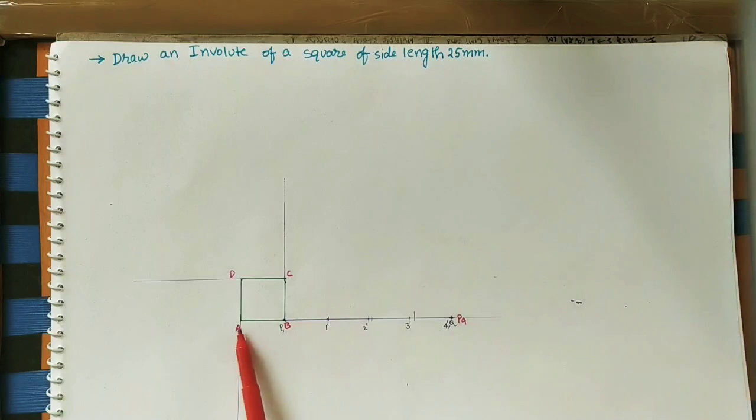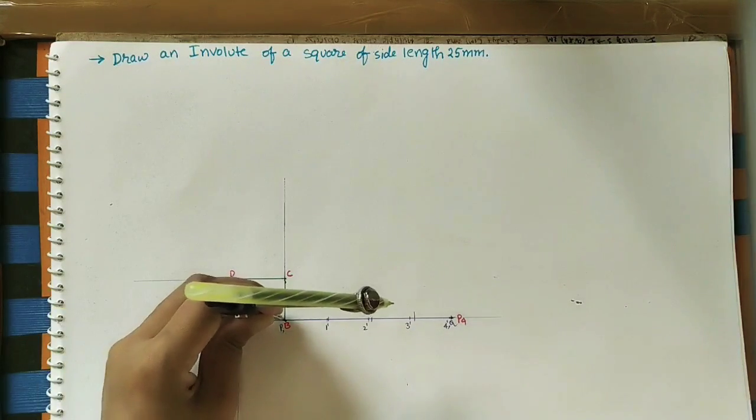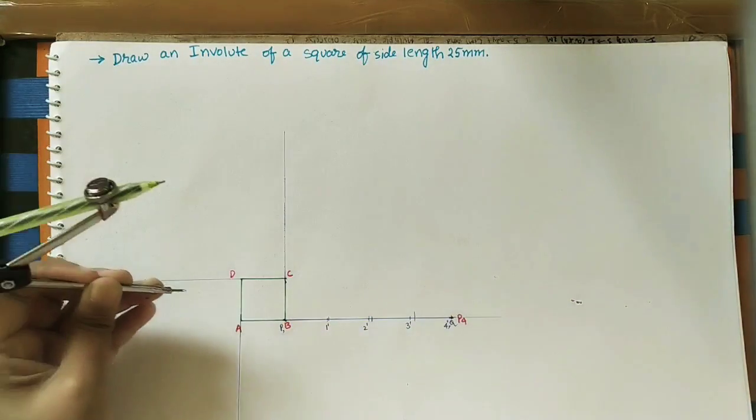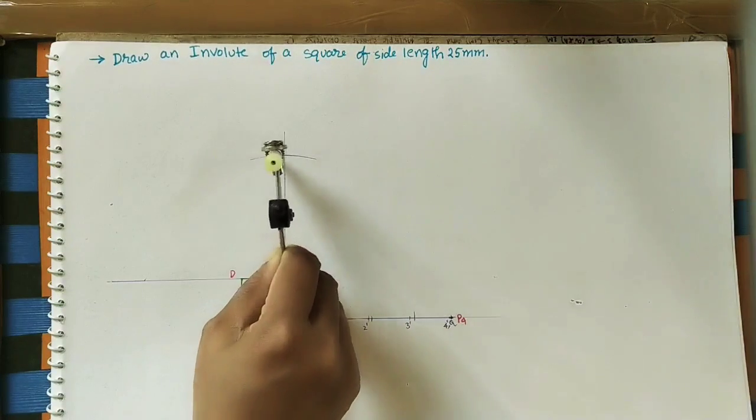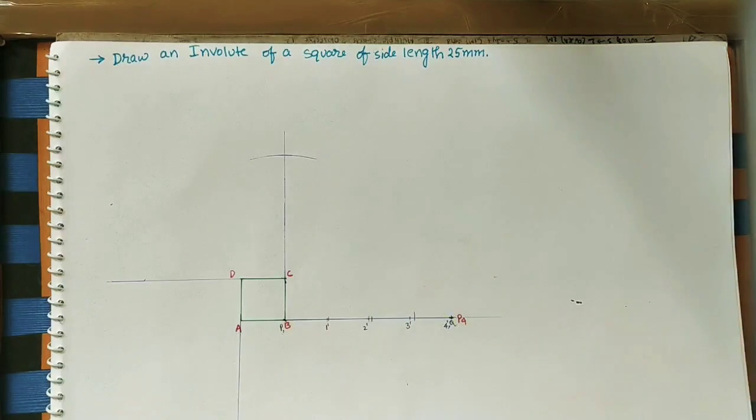Now take P3 length in the compass and mark it on the second side BC. With C as center, draw an arc. Take the intersection point as P3.